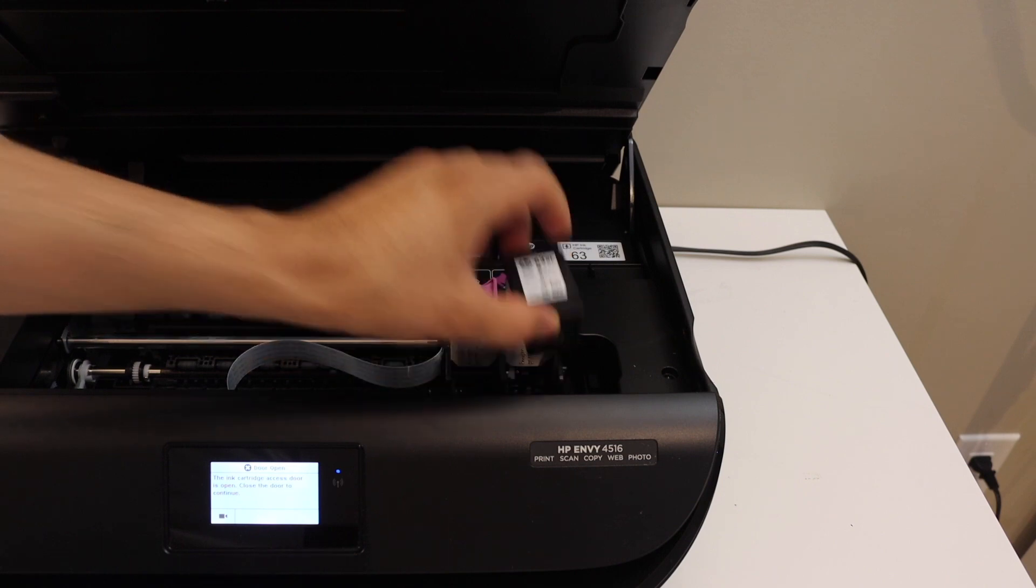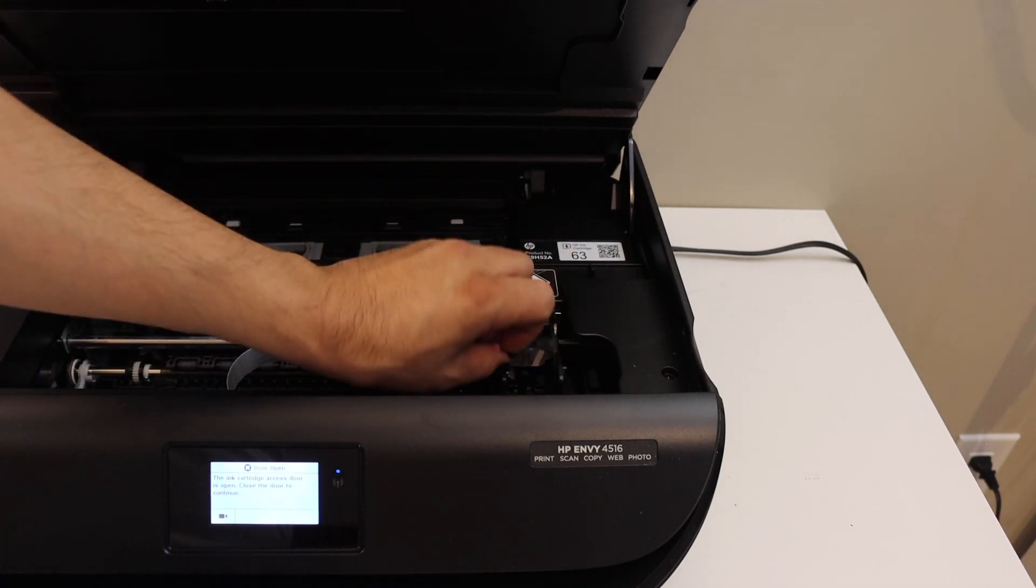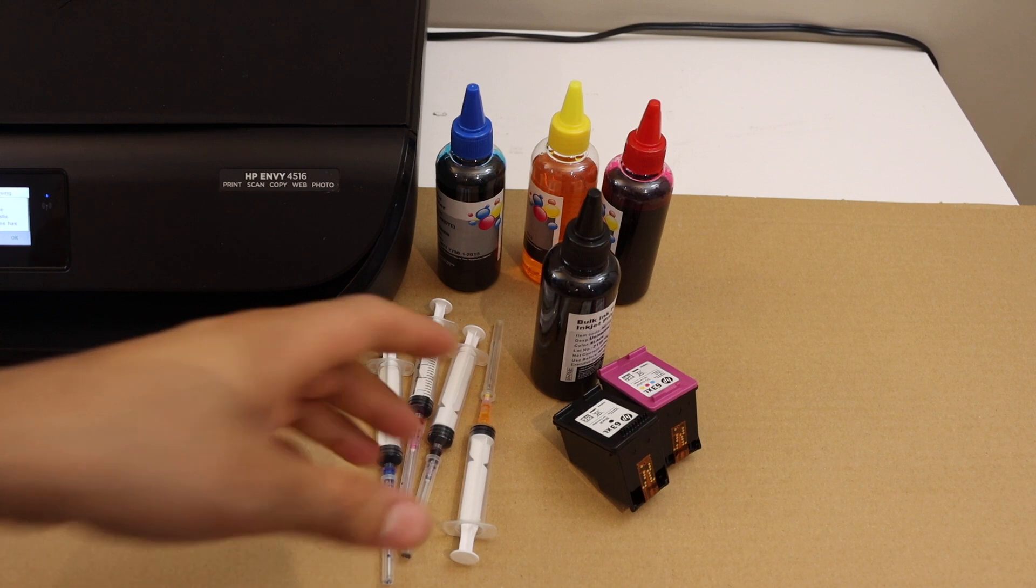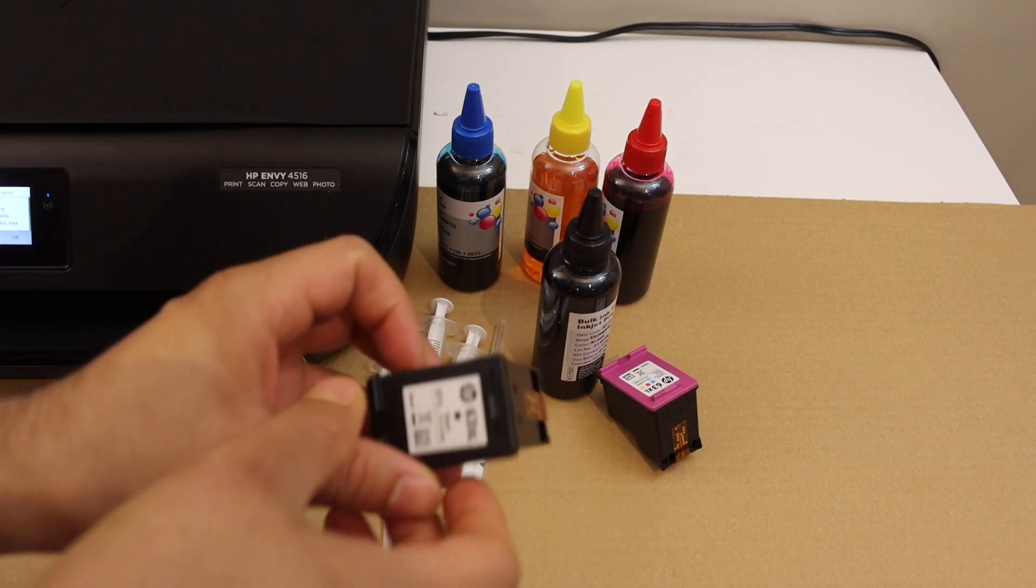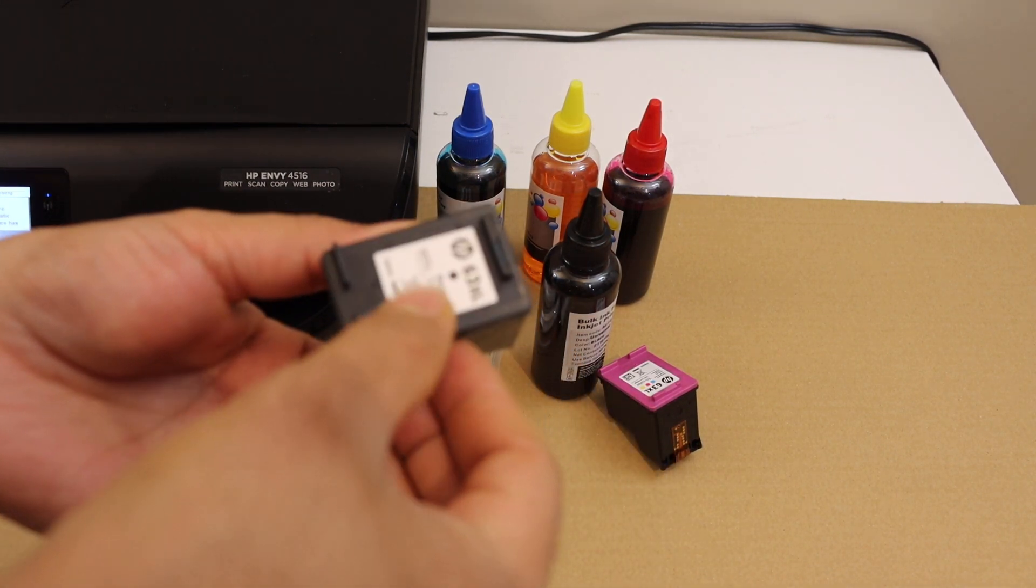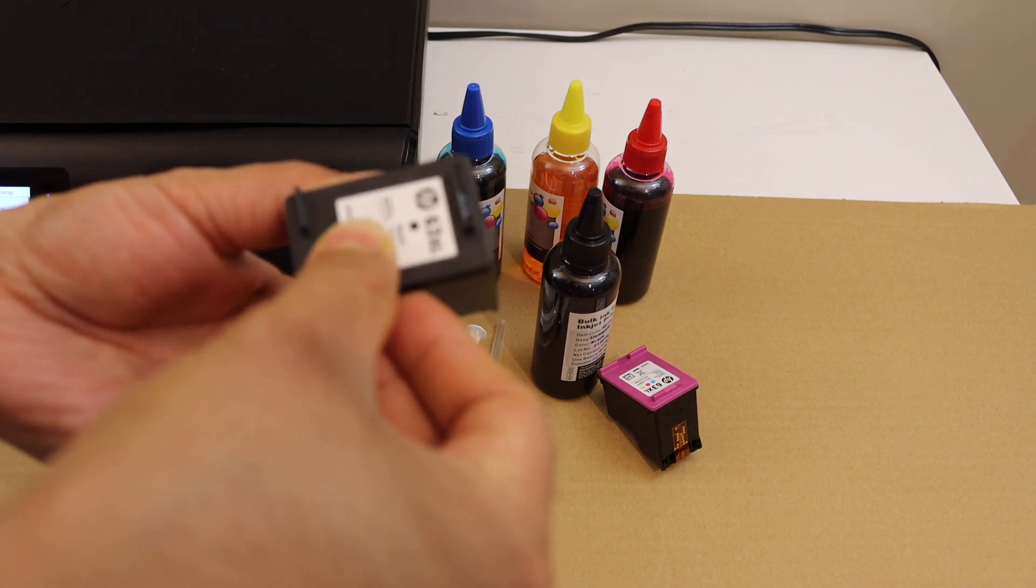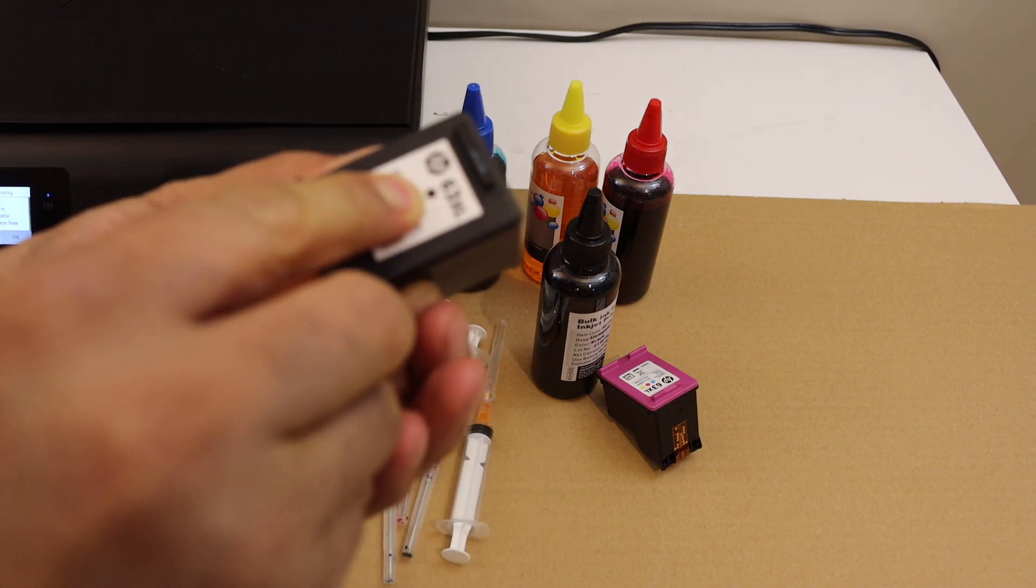Take both ink cartridges out here. Here is the ink. I am going to fill this ink cartridge. The first step is to locate the hole where we have to do it. For black it is in the middle.